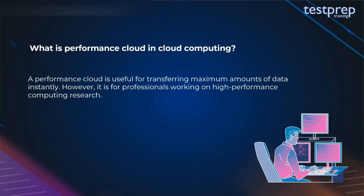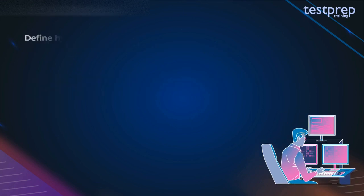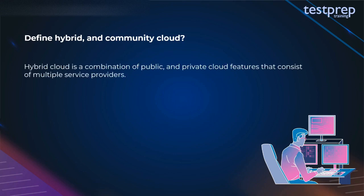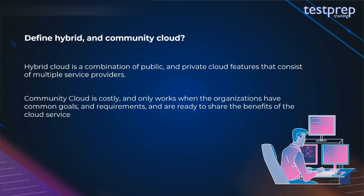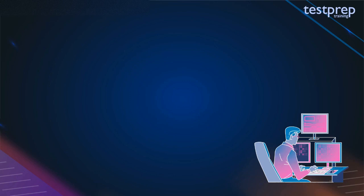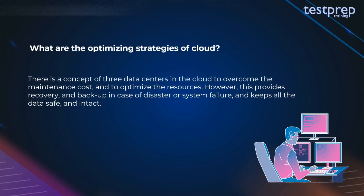Question 47: What is performance cloud in cloud computing? A performance cloud is useful for transferring maximum amounts of data instantly. It is for professionals working on high-performance computing research. Question 48: Define hybrid and community cloud. Hybrid cloud is a combination of public and private cloud features consisting of multiple service providers. Community cloud is costly and only works when organizations have common goals and requirements and are ready to share the benefits of the cloud service.